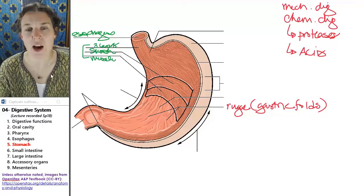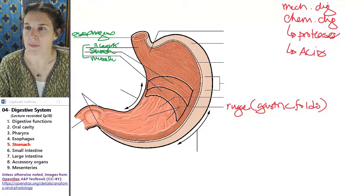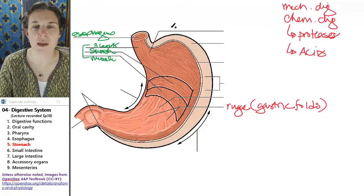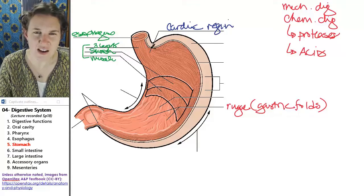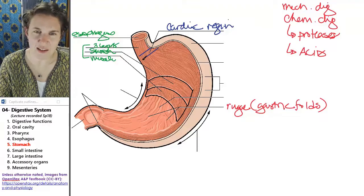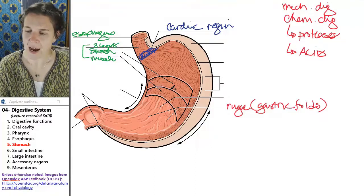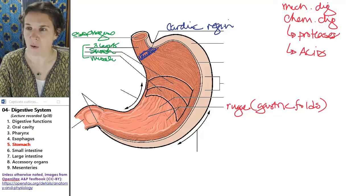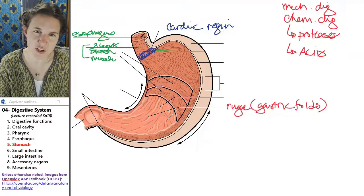The rest of it stays and continues to get mushed up. So let's look at the different areas of the stomach and label these things. So the cardiac region is the area of the stomach where food enters, and it's the first place that you enter.